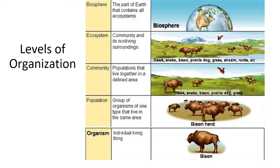A community consists of different species in an area. So now we don't just have the bison — we also have the grass, snakes, hawks, and prairie dogs. Many species are represented together in one community.